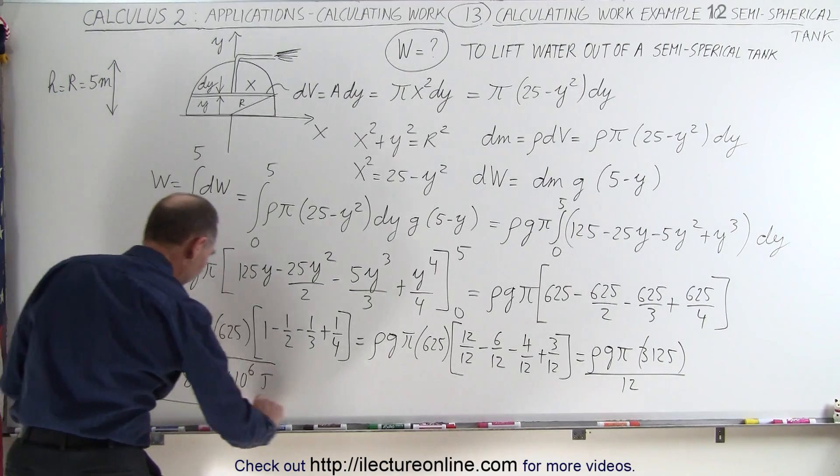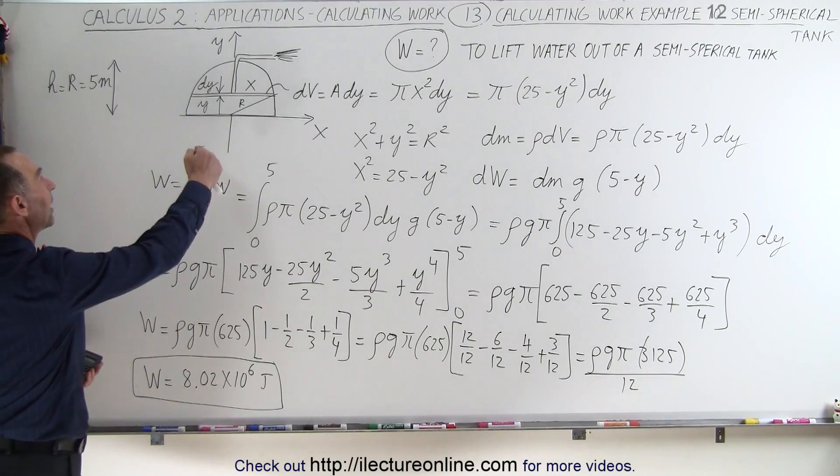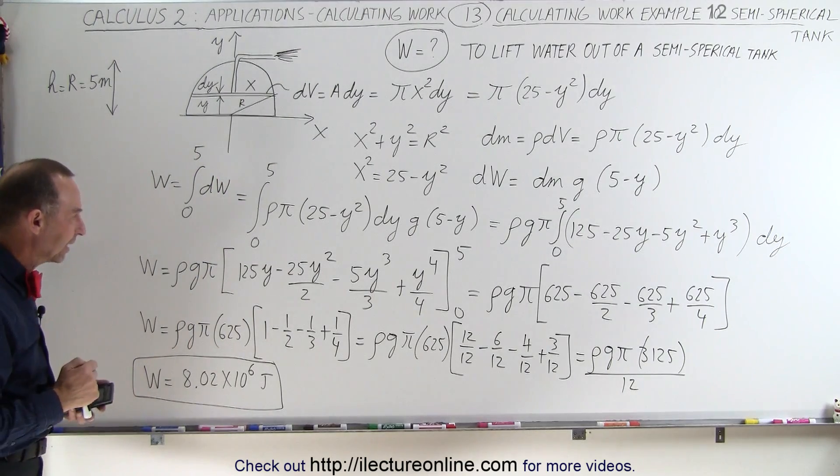Joules. Of course, 10⁶ is million, so just slightly over 8 million joules to empty out that semi-spherical tank.